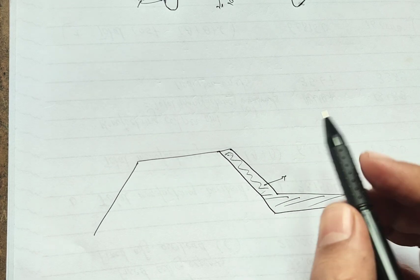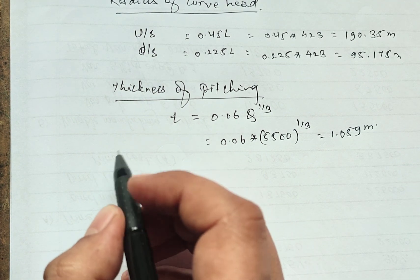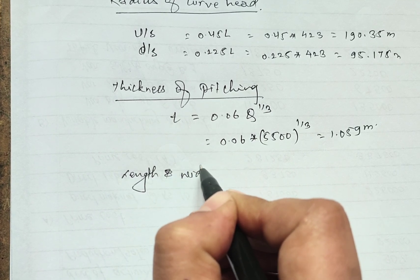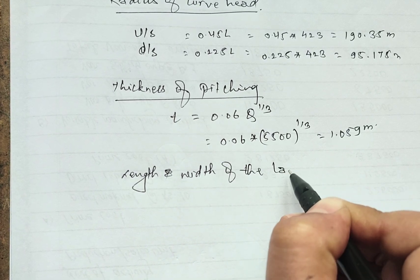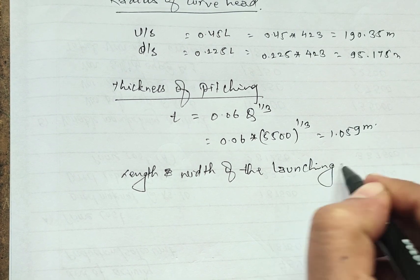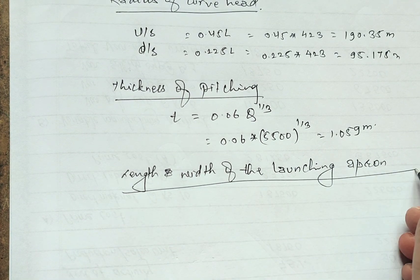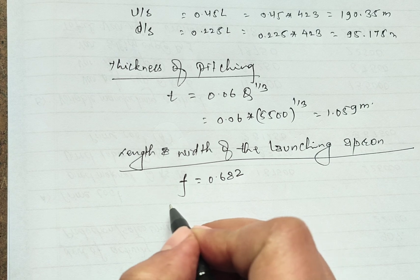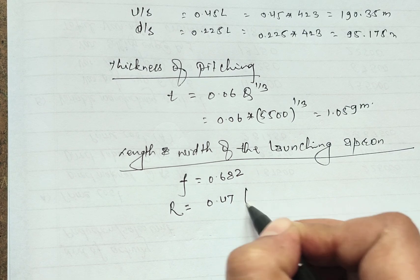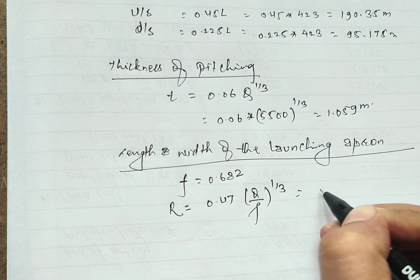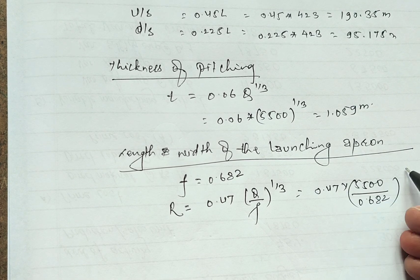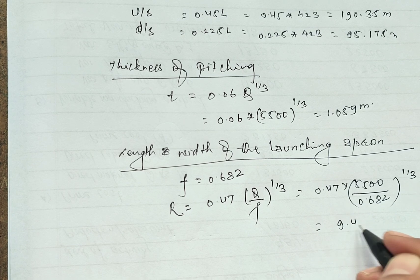Now we calculate the length and width of the launching apron. We have already calculated the shield factor f equals 0.682. The scour depth R equals 0.47 times (Q/f) to the power of one-third equals 0.47 times (5500 divided by 0.682) to the power of one-third equals 9.425 meters.